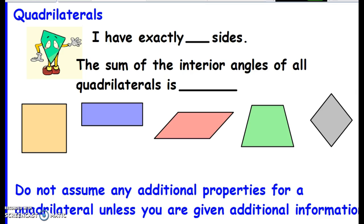If I am a quadrilateral, I have exactly four sides. The sum of my interior angles of all quadrilaterals is, I don't know. Let's try and figure it out.